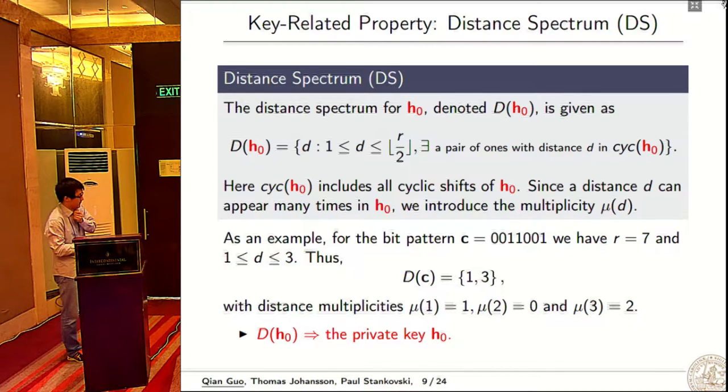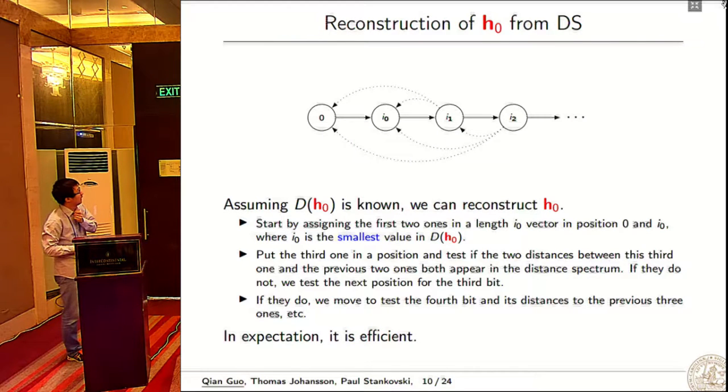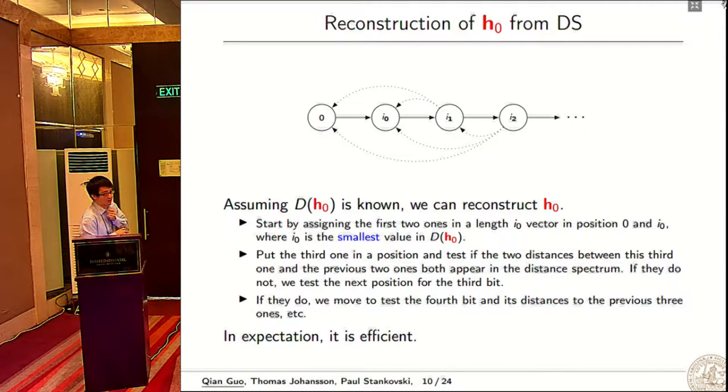I will show how to construct a private key from the distance spectrum. It's a quite naive algorithm. Because we can do cyclic shift, we put the first nonzero bit in position 0 and the second one on position i0, where i0 is the smallest value in the distance spectrum. Then we inject the third bit, the fourth bit, etc. The point is that if we inject the fourth bit here, then these distances should all be in the distance spectrum. If unsatisfied, this is an invalid pattern, so we choose another value.